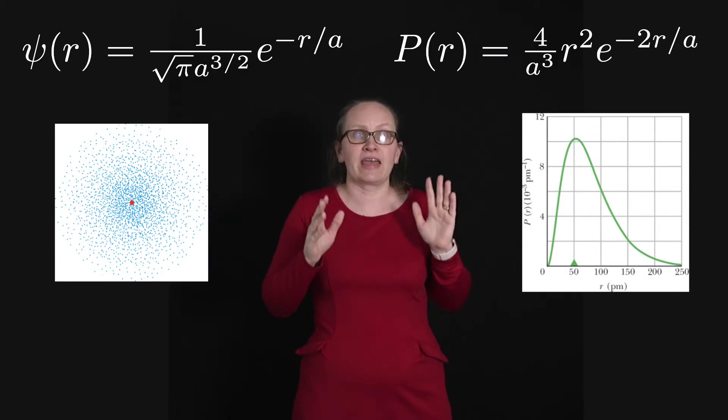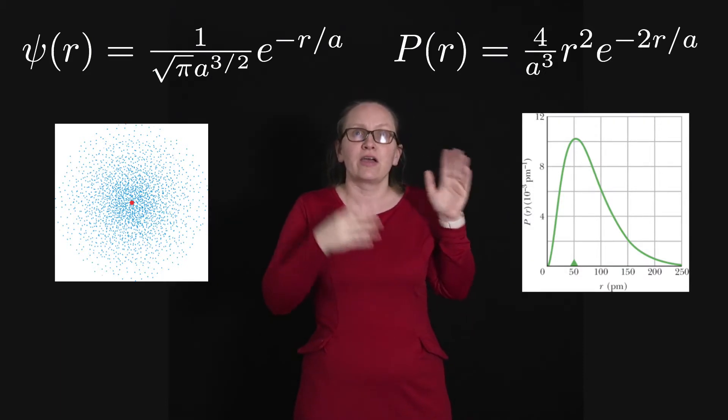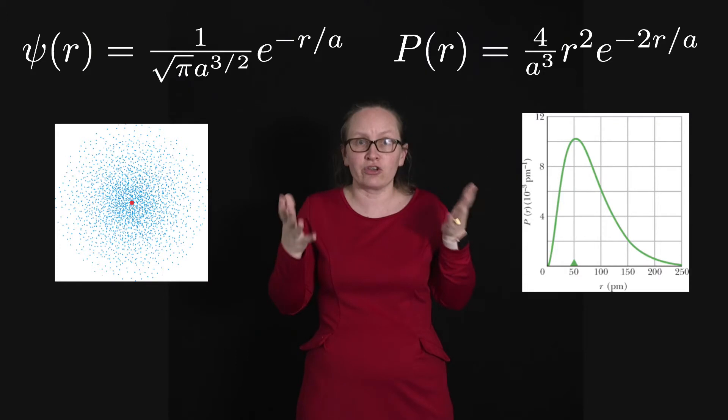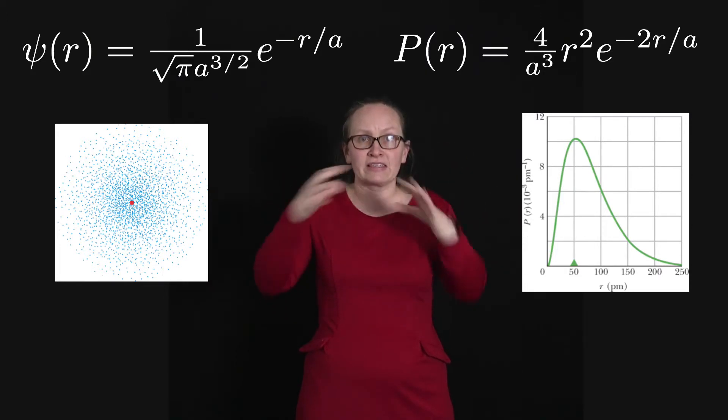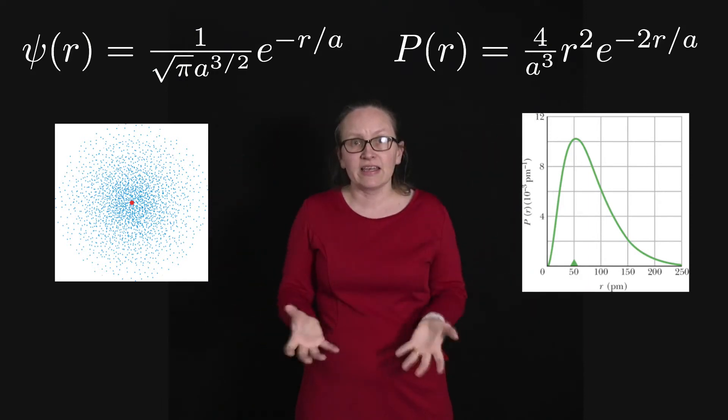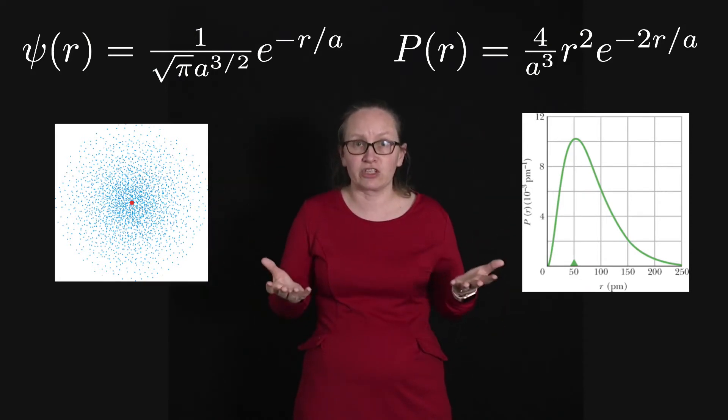Which is just your s orbital for that ground state. So you can see the probability is a spherical function.